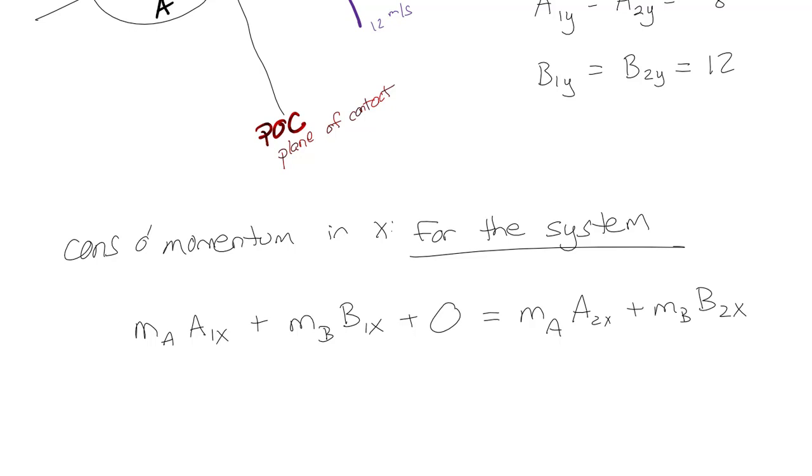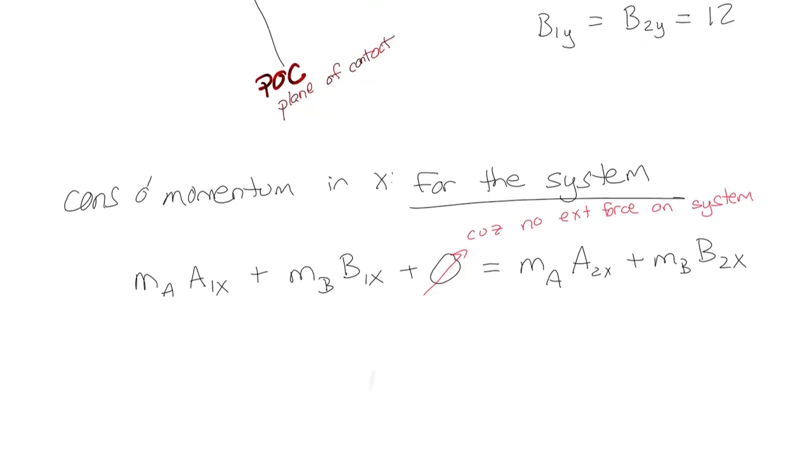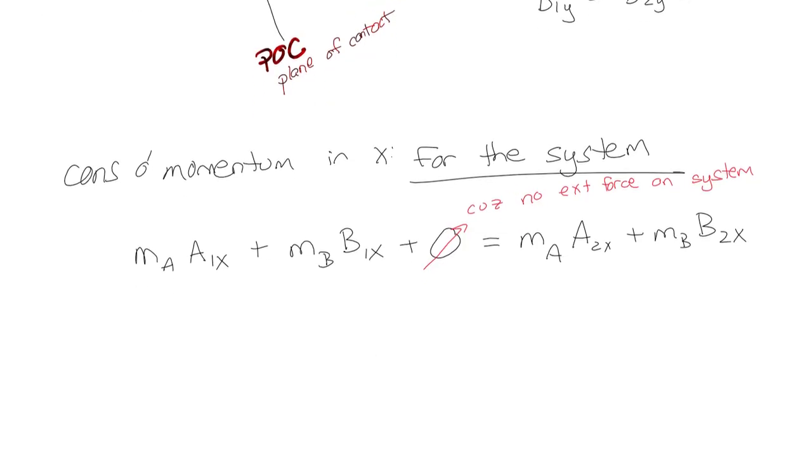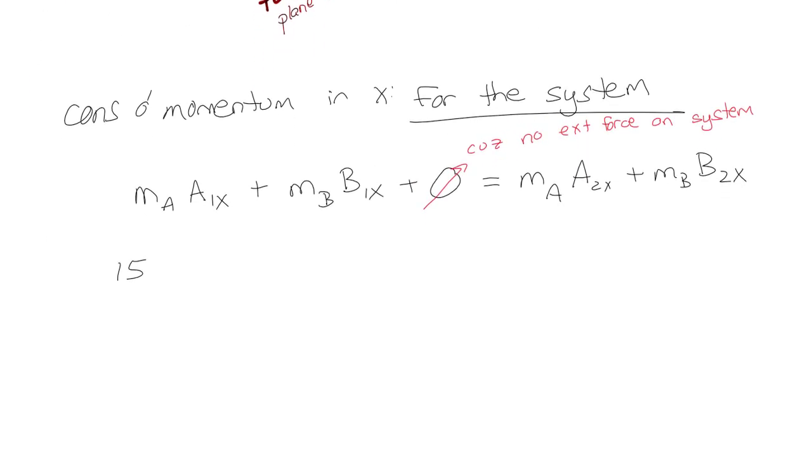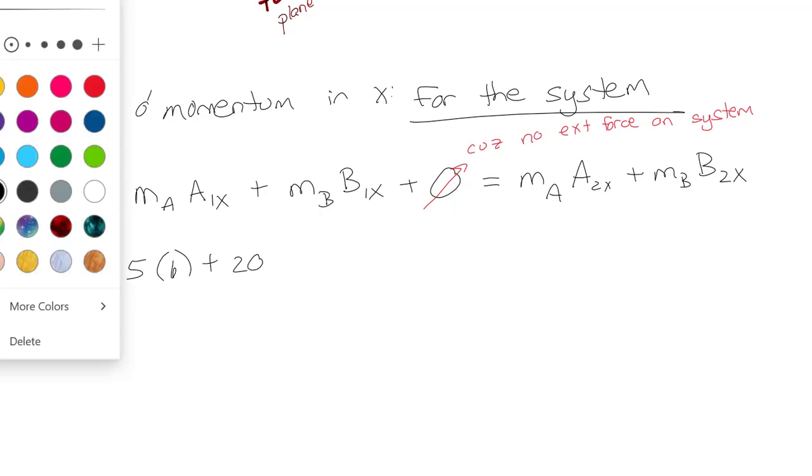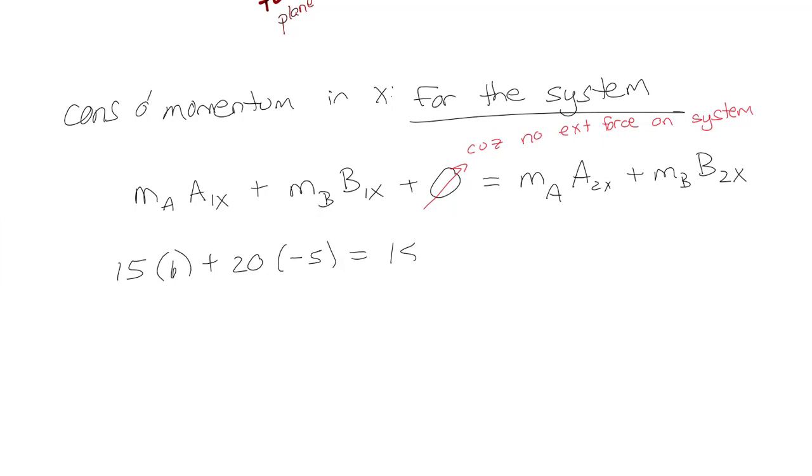Okay, so we've actually got a lot of these. So the mass of A was, like 15, and its initial velocity in that direction was 6, and then the other one is negative 5. So 6, and then the mass of B is 20, and its direction is negative 5, and that's equal to 15 times some unknown A2X and 20 times some unknown B2X. So I can simplify that and get 3A2X plus 4B2X is equal to negative 2. Yay!